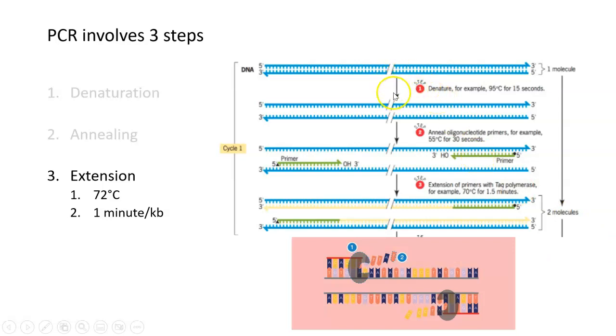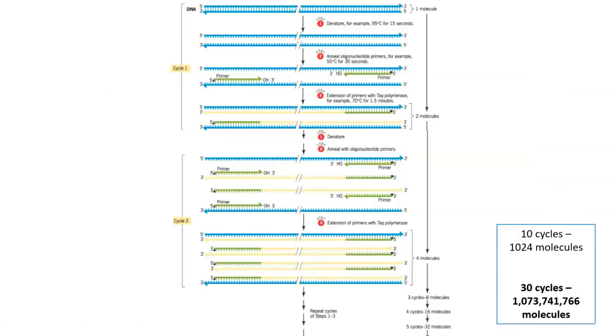You have one denaturation step, annealing of the primers, and then extension of those primers. That is one cycle in the PCR. But that cycle is repeated again—denaturation, annealing, extension. Generally, those cycles are repeated about 30 to 40 times.